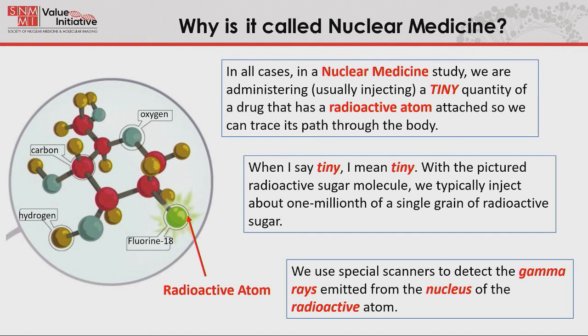We're injecting a tiny quantity — and when I say tiny, I mean tiny. When we do one of these studies with radioactive glucose, we're injecting about a millionth of a single grain of radioactive sugar. So the mass quantity is so small there's almost no possibility for side effects. This is the tracer methodology. We then use special scanners to detect the gamma rays from the nucleus of the radioactive atom.